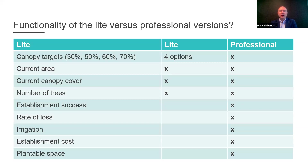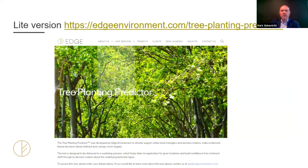Looking at the light versus professional version functionality: the light version has three core parts of functionality that are open and can be manipulated, with four preset canopy target options of 30, 50, 60, and 70%. Whereas in the professional version, it's fully open. I'm now going to stop screen sharing on the presentation and jump into the light version just to show you how simple it is.